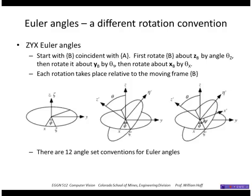We start with B coincident with A, just like before. We rotate B about, let's say, the z of B, and then rotate about the y of B, and then the x of B. So each rotation takes place relative to the moving frame, not the fixed frame. And just like XYZ fixed angles, there are 12 possible conventions for Euler angles.